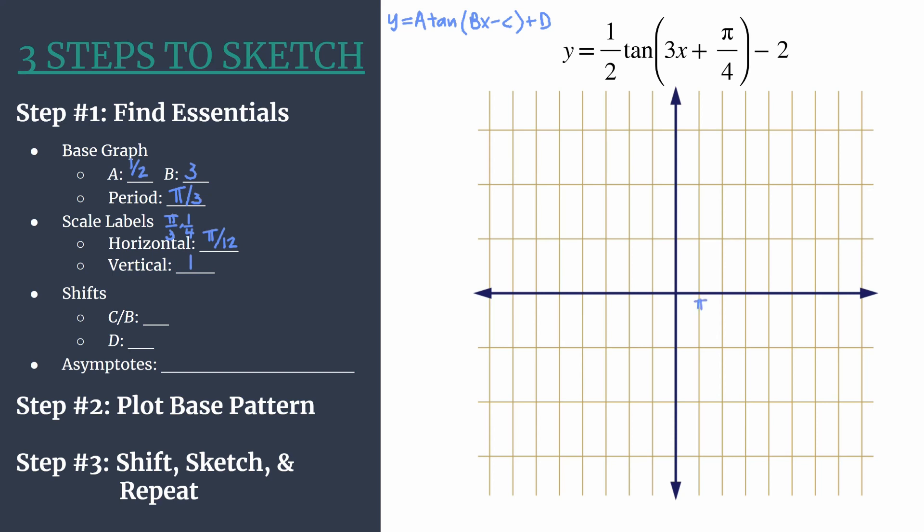Let's go ahead and label our axes. Horizontally, we're counting 1 π/12, 2 π/12 which reduces to π/6, 3 π/12 reduces to π/4, 4 π/12 reduces to π/3. We have 5 π/12, 6 π/12 reduces to π/2, 7 π/12, and 8 π/12 reduces to 2π/3. I'm going to pause and label the negative side of this horizontal axis, all the same values, just negatives. So if you're following along, pause and take a moment to do the same. Here's how the negative side of the axis looks.